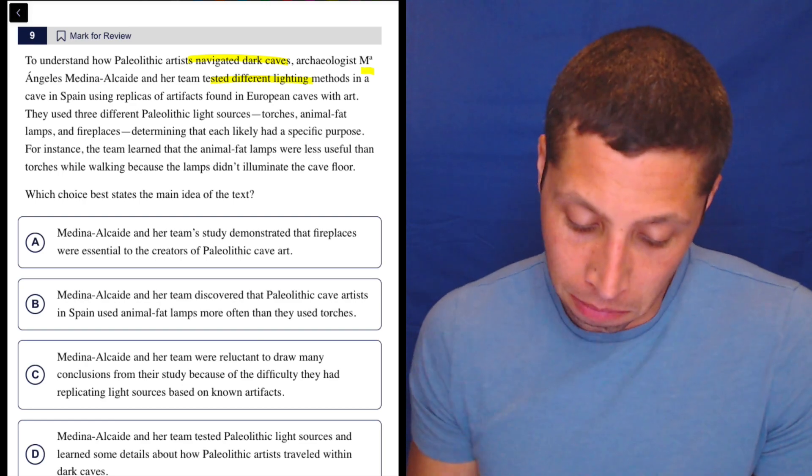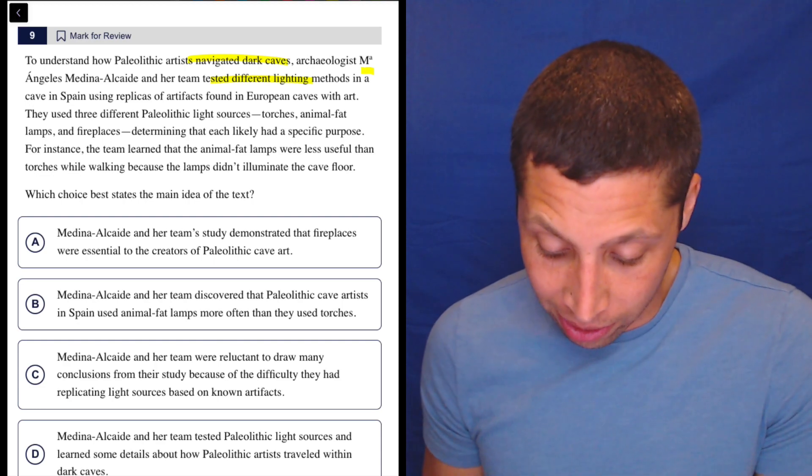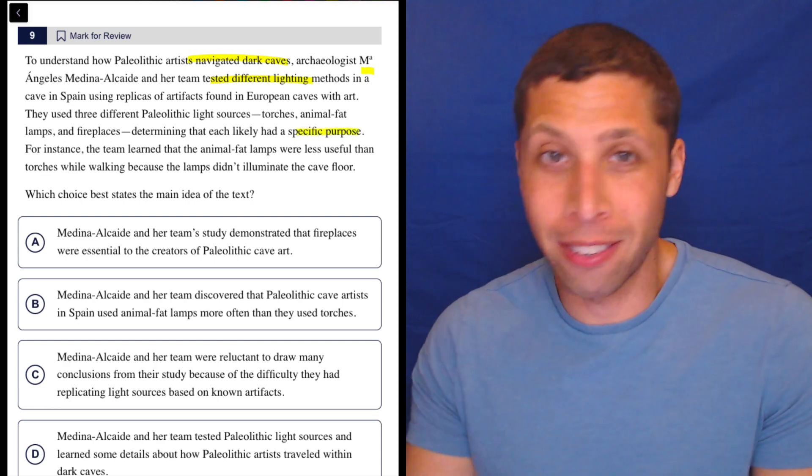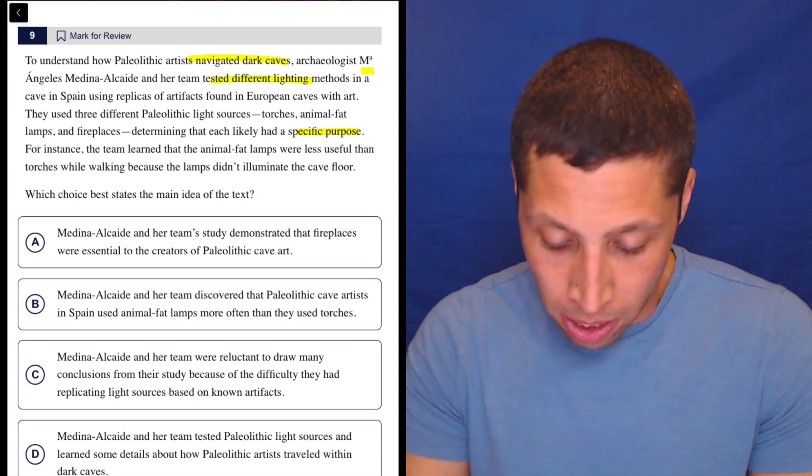Okay, looking back, they had a specific purpose. So what did they find? Nothing. They're just different. That's all. So let's take a look at the choices.